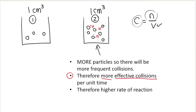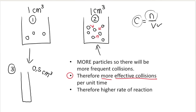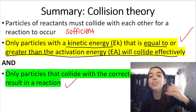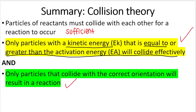We can also decrease the volume — say we halve the volume to 0.5 cubic centimetres. We've halved the volume, so we've increased the pressure. It's the same amount of particles in a smaller volume — we've squashed them together — so the pressure has increased. These particles are going to bump into each other more frequently, resulting in more effective collisions per unit time and therefore a higher rate of reaction.